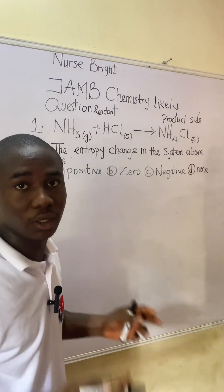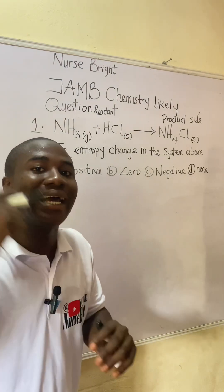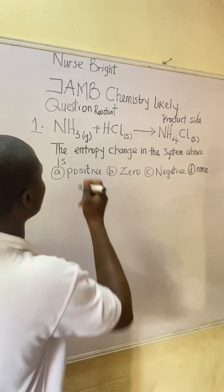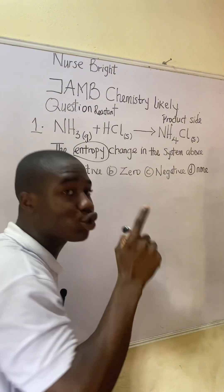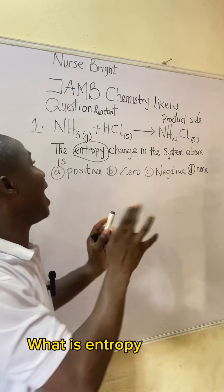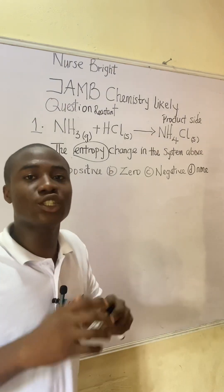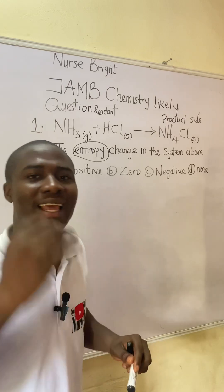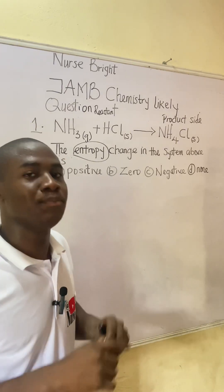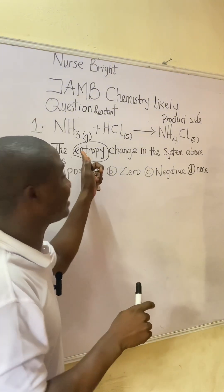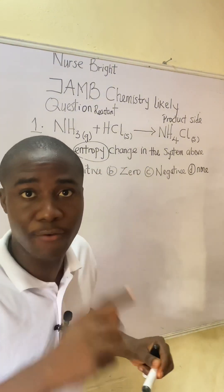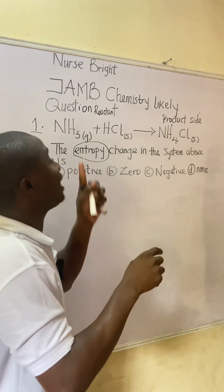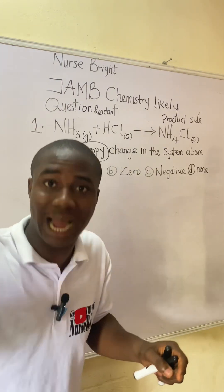After noting this, the next thing you must know — because we are about to solve this question — is understanding what the term entropy means. Entropy simply explains the degree of disorderliness in a system. There is a state of matter that entropy favors because of this disorderliness, and that state is gas.